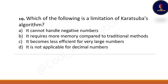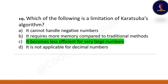Next question: which of the following is a limitation of the Karatsuba algorithm? Option A is it cannot handle negative numbers, Option B is it requires more memory compared to traditional methods, Option C is it becomes less efficient for very large numbers, and Option D is it is not applicable for decimal numbers. The correct option is Option C — it becomes less efficient for very large numbers.